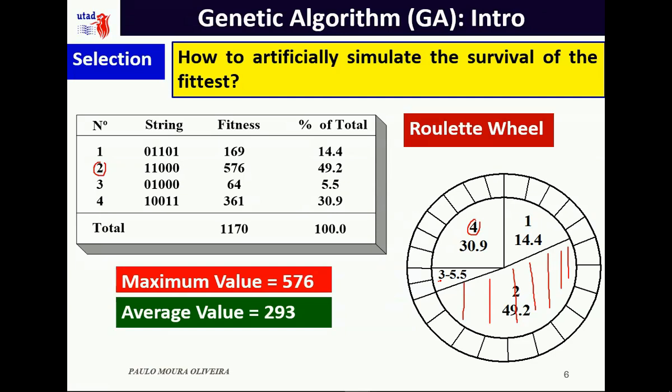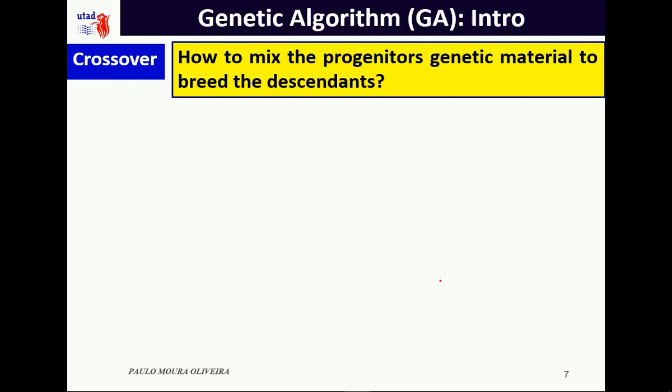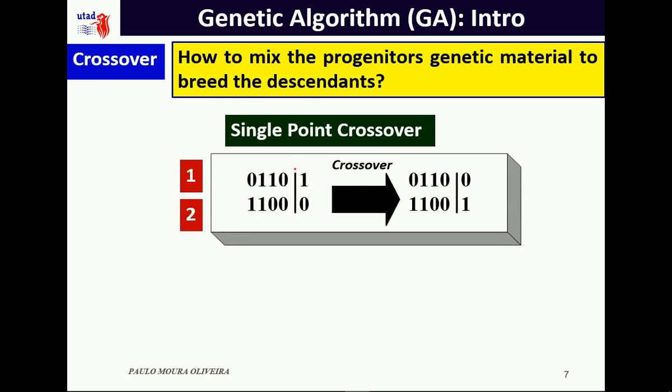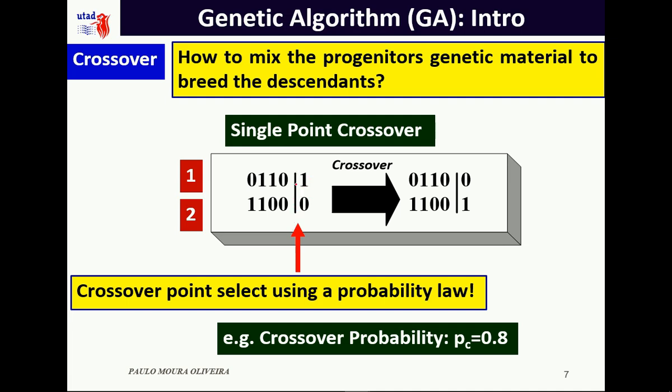After selecting the best elements, we have to cross over the genetic material to generate the new population. In this binary coding, one of the most popular methods is called single-point crossover. This means a crossover point is selected randomly according to a probability law.